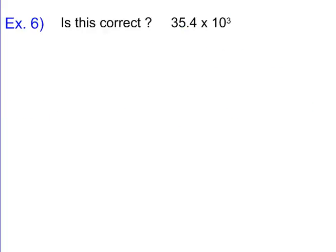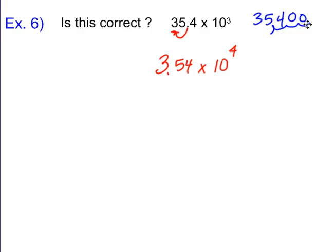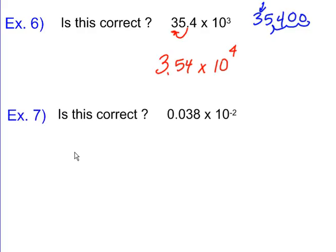Now let's look at format. Is 35.4×10³ correct? No, because we need only one digit in front of the decimal. We need to move it over one more place, which changes the exponent to 10⁴. We can verify: 35.4×10³ moves three decimal places to give 35,400 — and 35,400 requires moving four places from 3.54, confirming the answer is 3.54×10⁴.